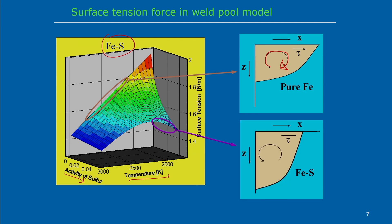When an optimum quantity of surface active elements is present in the Fe-S system, it simply reverses the direction of the Marangoni shear stress — from outer periphery toward the center. The flow pattern then acts in the anti-clockwise direction, which enhances weld penetration while decreasing weld width. This is the effect of surface active elements: in two cases we can differentiate that in the presence of surface active elements, weld penetration is enhanced.